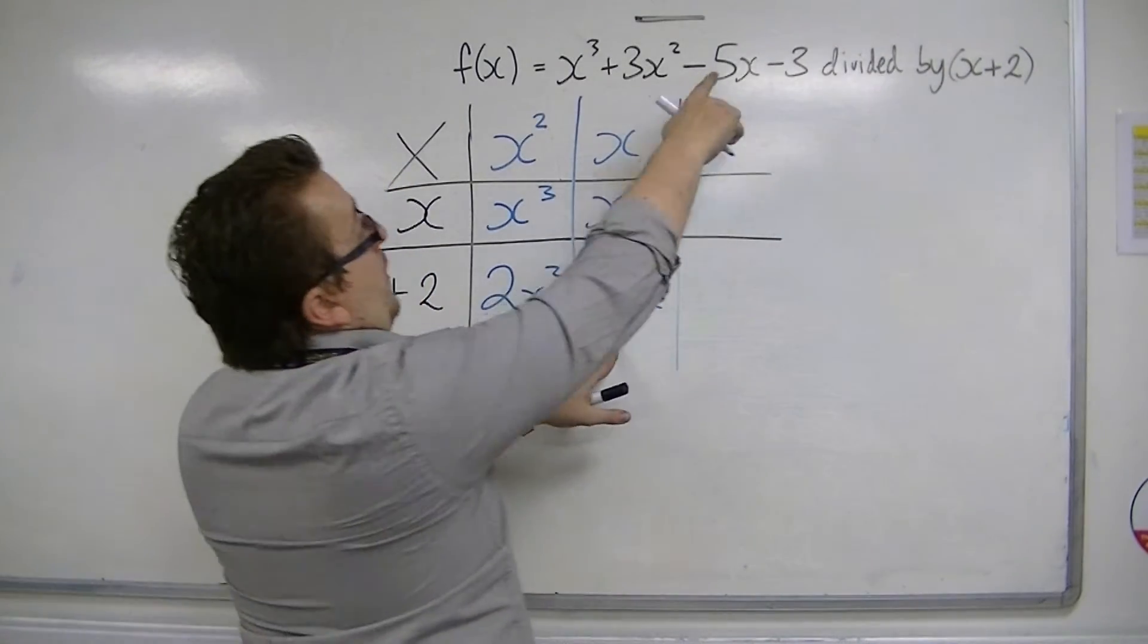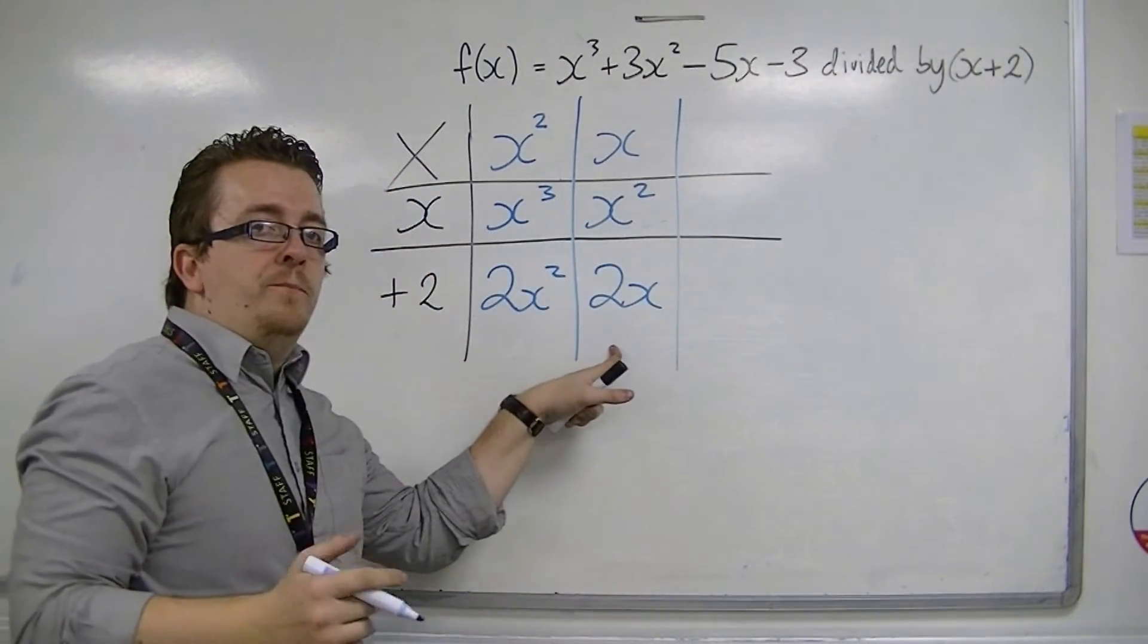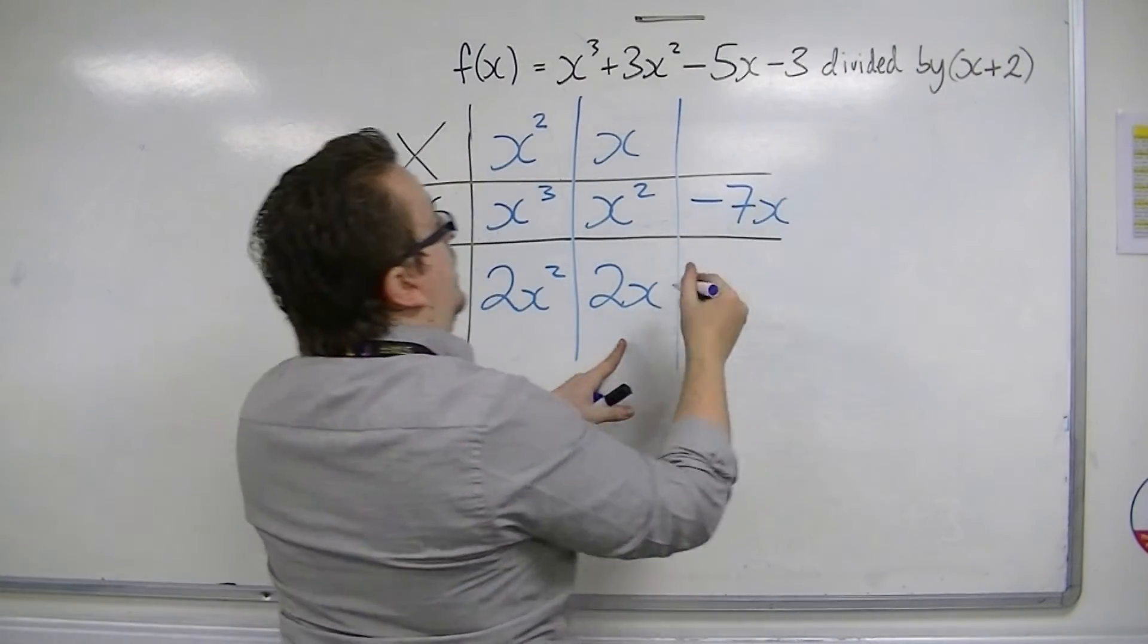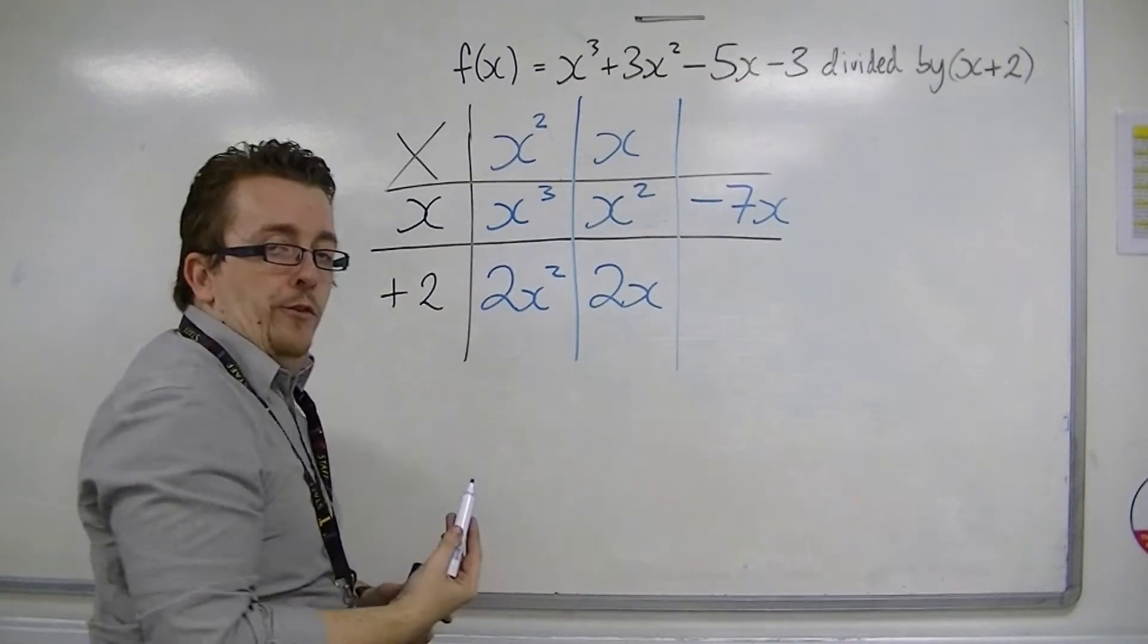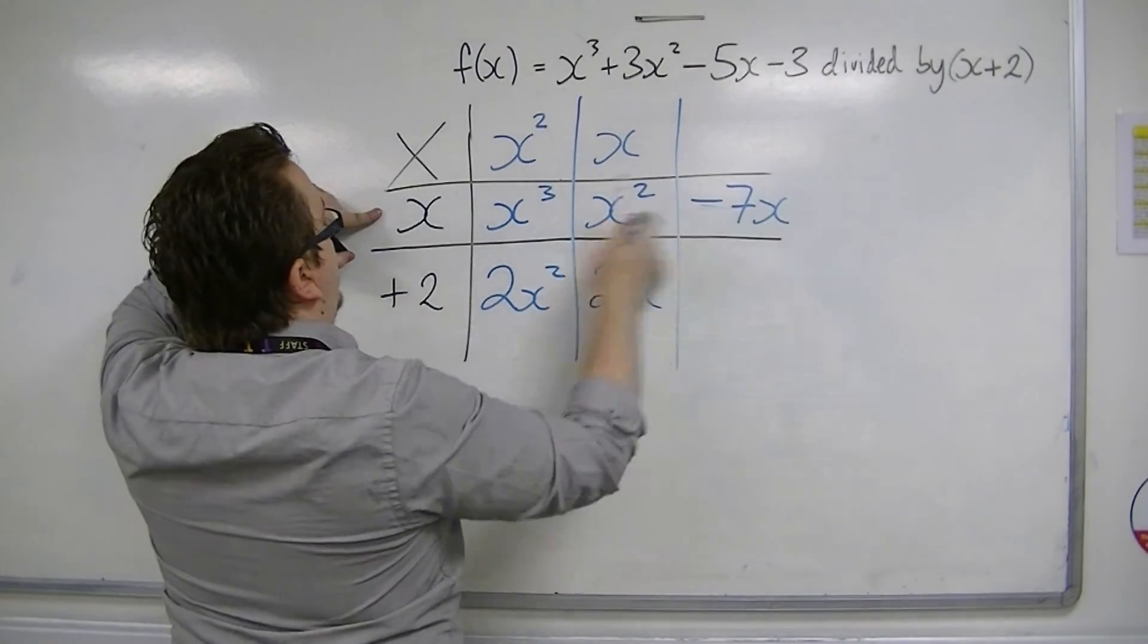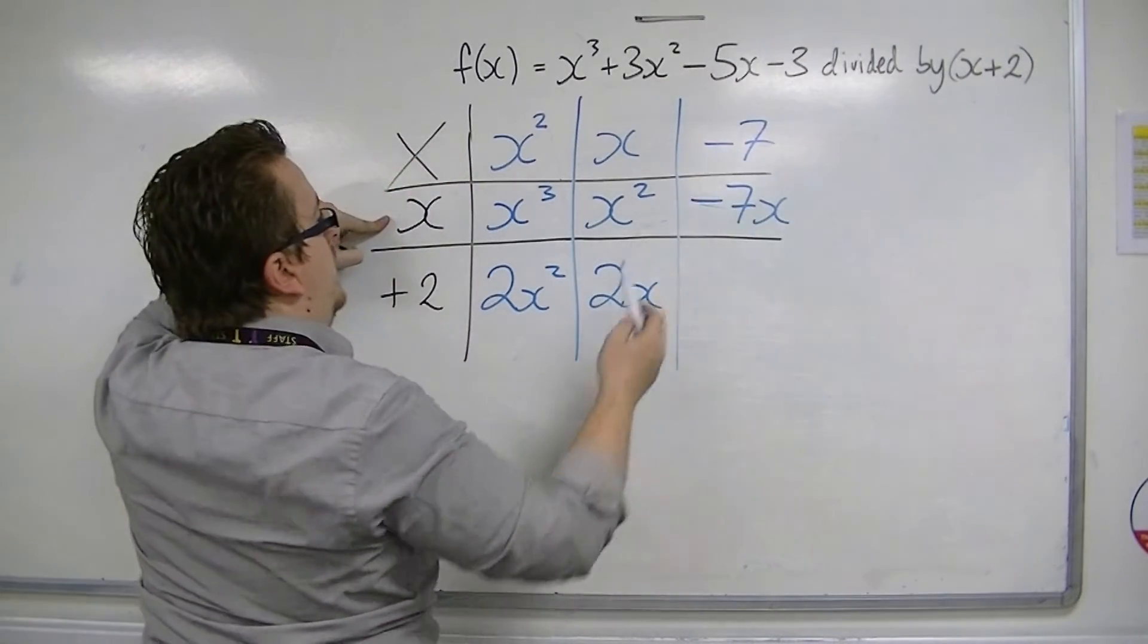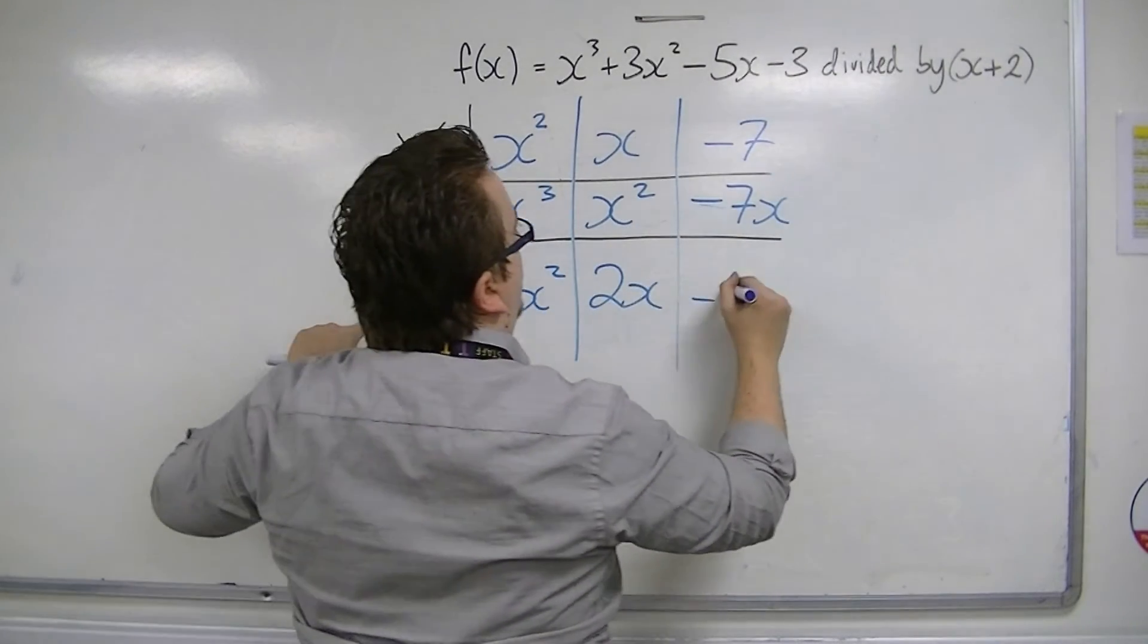Now, I don't have 2x, I have minus 5x. So, 2x take away 7x, will combine to make the minus 5x. So, to get that minus 7x, I've got x times minus 7. Minus 7 times 2 is minus 14.